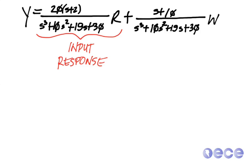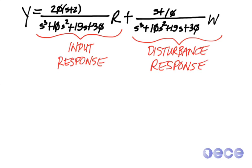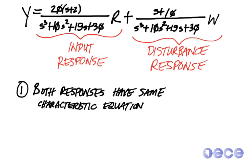We can break these two pieces down into the input response. This is the response based on our input r, and then we also have the disturbance response. So whenever some disturbance shows up into the system, this is how we react to that disturbance. A few points here: one, both of these responses have the same characteristic equation. So if the characteristic equation indicates stability, then our system is going to be stable.